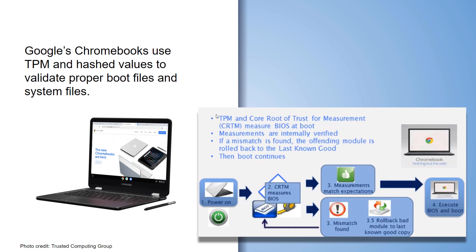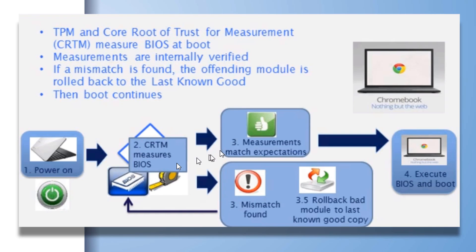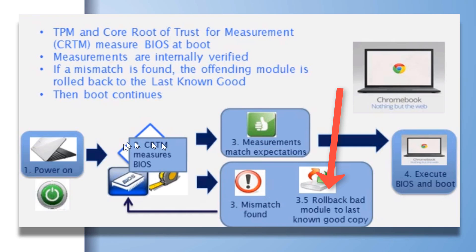Google's Chromebook uses TPM hash values to validate proper boot files and system files. When you power on a Chromebook, there are measurements of the BIOS and firmware, as well as measured expectations on the operating system. If they don't meet expectations, it can roll back to a known good copy. This is why Chromebooks have really gained a reputation for security.